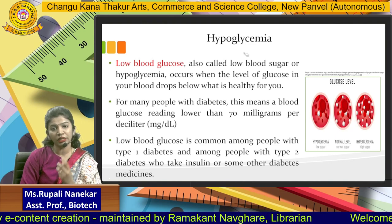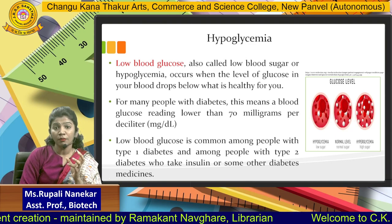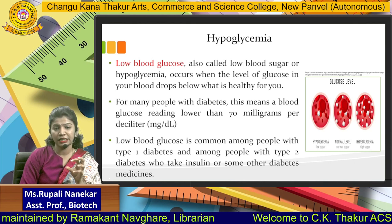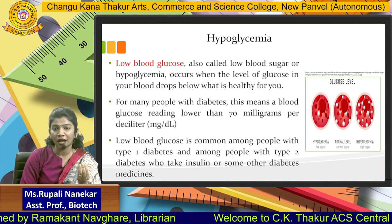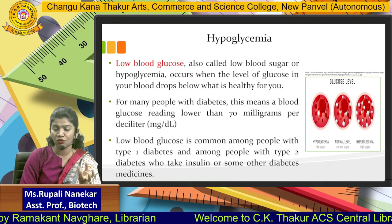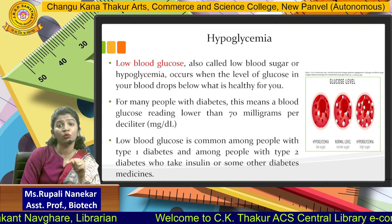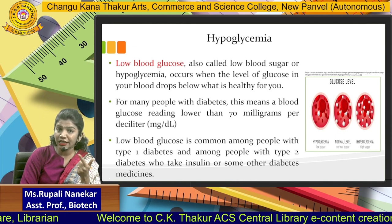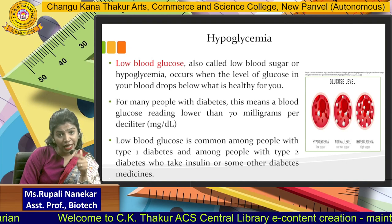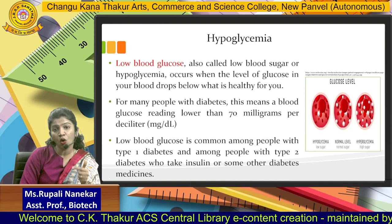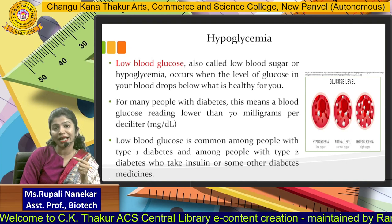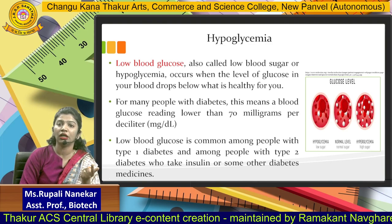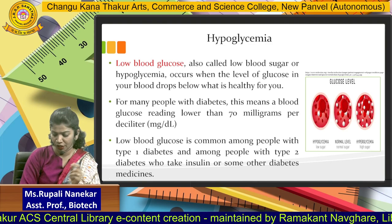As I mentioned, the level is below 70. This is common in people with type 1 diabetes, where you have low blood glucose. Sometimes type 2 diabetes patients can also experience this because they are on insulin shots, and their glucose level can drop down, resulting in hypoglycemia.